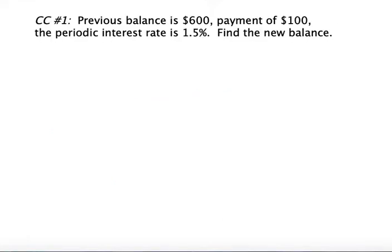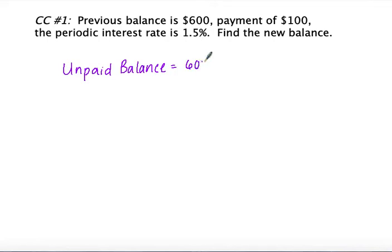We're going to look at concept check number one from the book. The previous balance was $600, a payment of $100 was made, and the periodic interest rate is 1.5%. You can pause the video and try this on your own. The first thing we do is calculate our unpaid balance: $600 minus the $100 payment gives an unpaid balance of $500.